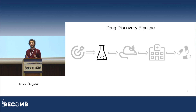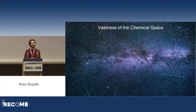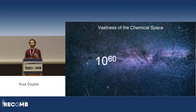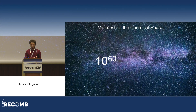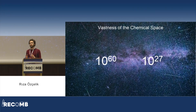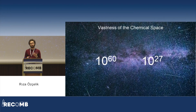Why do we need machine learning to find those bioactive compounds? Because the chemical space is huge. The chemical space — the set of all possible drug-like molecules — is estimated to contain 10 to the 60 compounds. To give you an idea of how large that number is, the number of stars in the observable universe is only around 10 to the 27. So we definitely cannot explore this space chemical by chemical in a wet lab. We need computational models to guide our search, prioritize some chemicals, and give us a narrower space to test in the lab.